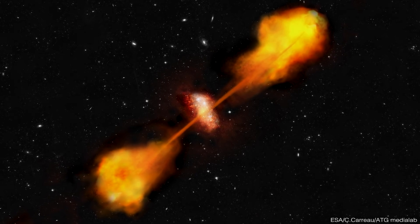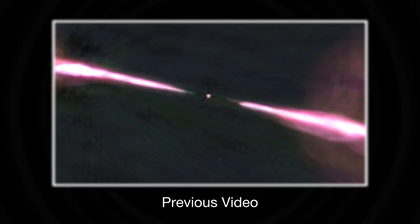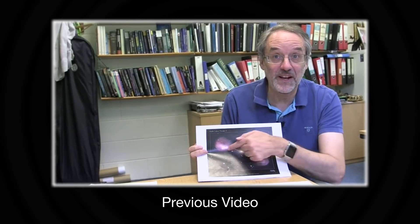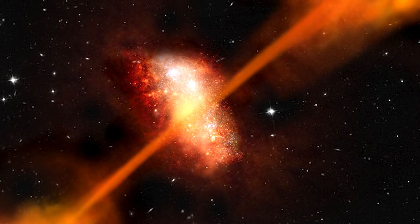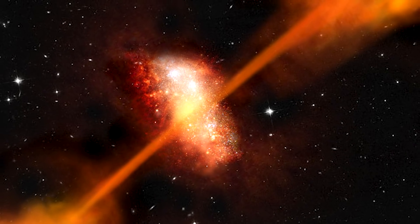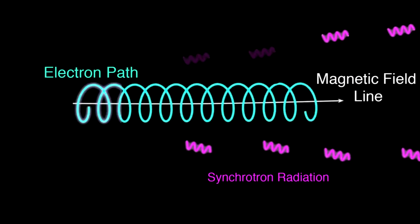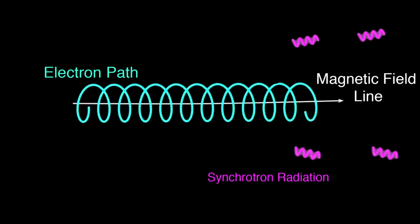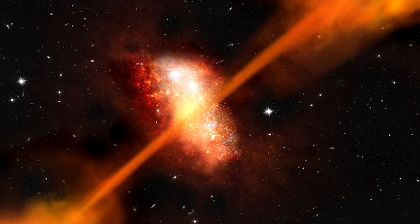We made a video some time ago talking about radio jets — the fact that when you look in the radio part of the spectrum at some galaxies, you find these enormous jets coming out of them, associated with the black hole in the middle. The black hole is throwing out material in very energetic form to produce enormous jets of radio emission. It's synchrotron emission — electrons and other charged particles orbiting around magnetic fields and emitting radio waves. WATs and NATs are like that, except they're bent.